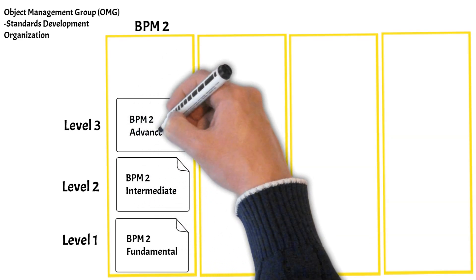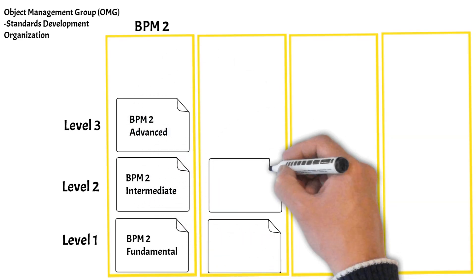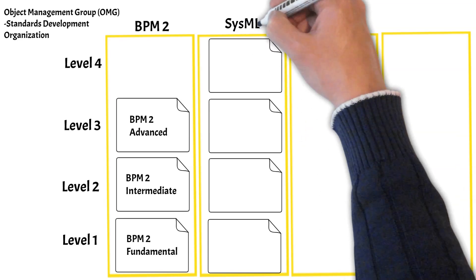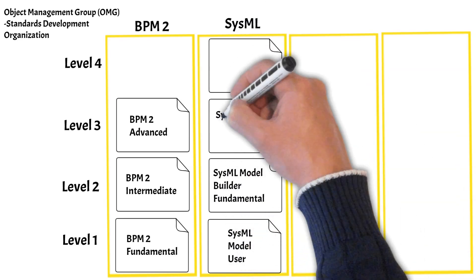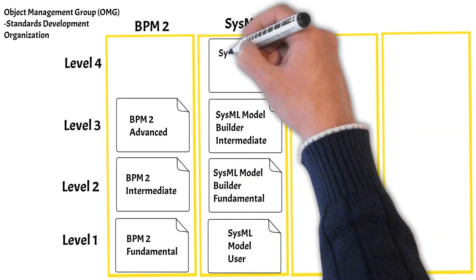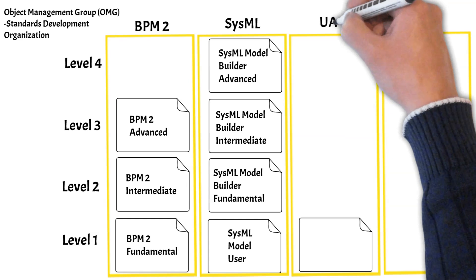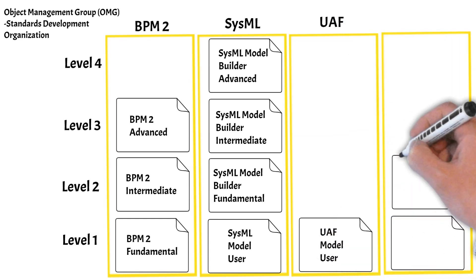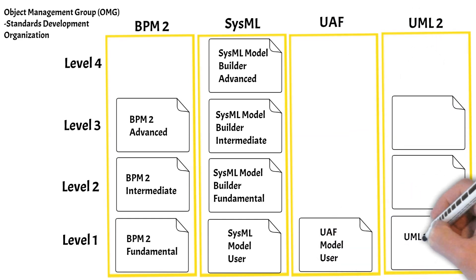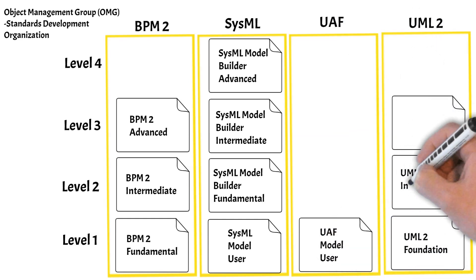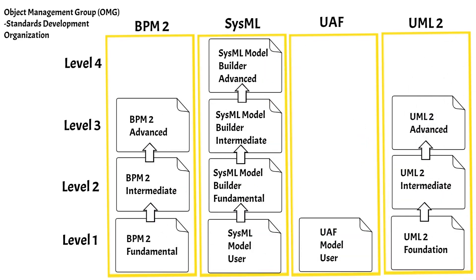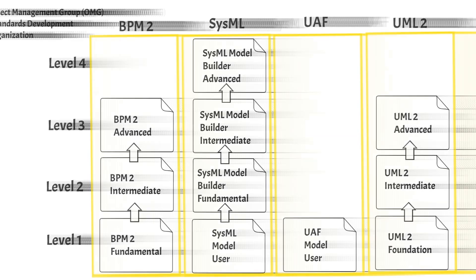They provide the Business Process Management II certifications with three different levels, four different levels of the Systems Modeling Language certification, one level of the Unified Architecture Framework certification, and three levels of the Unified Modeling Language II certifications.